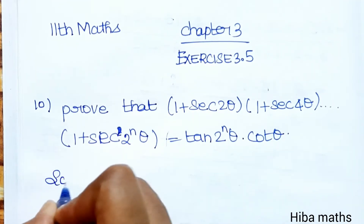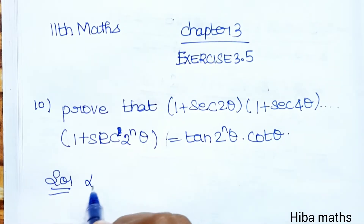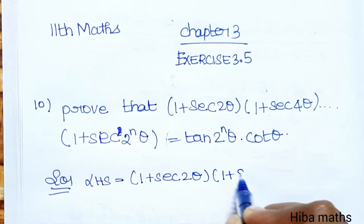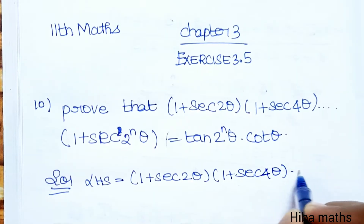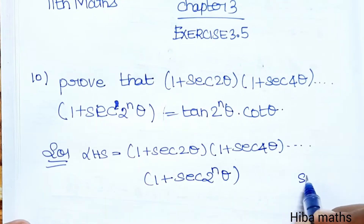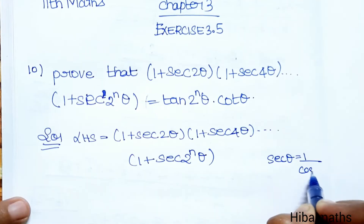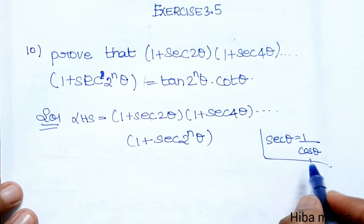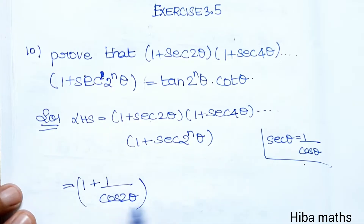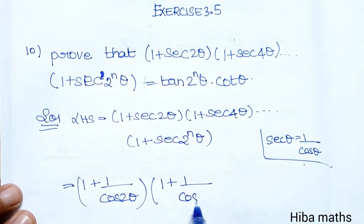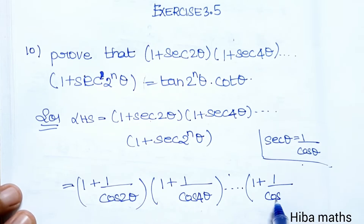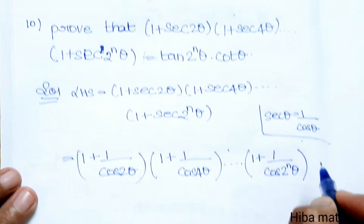Let's prove LHS equals RHS. Solution — starting with LHS: (1 + sec2θ)(1 + sec4θ)... up to (1 + sec2ⁿθ). Since secθ = 1/cosθ, this becomes (1 + 1/cos2θ)(1 + 1/cos4θ)... up to (1 + 1/cos2ⁿθ).